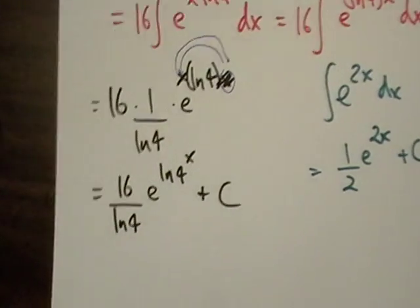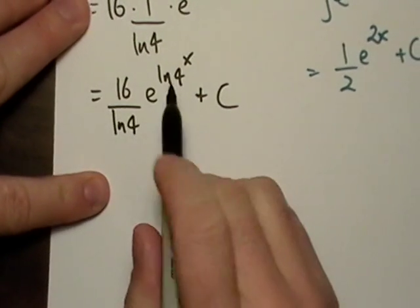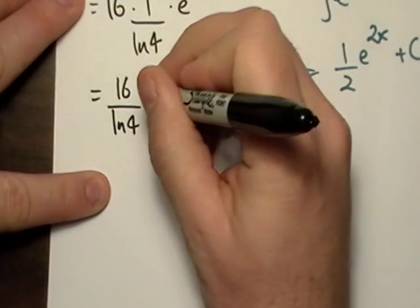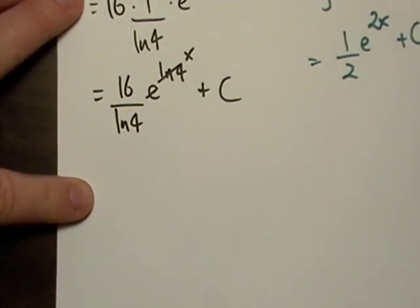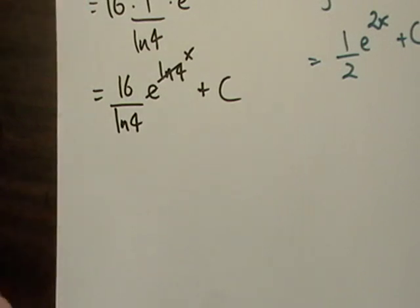All right, so we're there. Now what we can do is just go ahead and cancel out the e and the log, and we can write this.